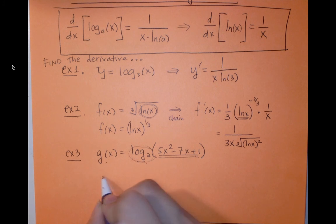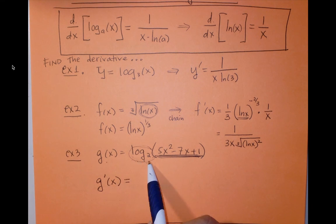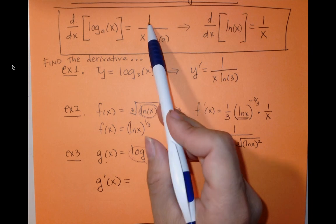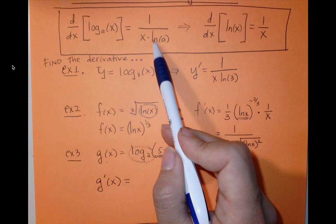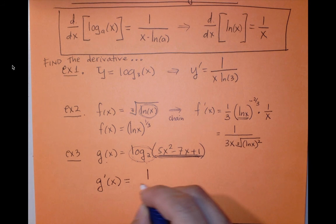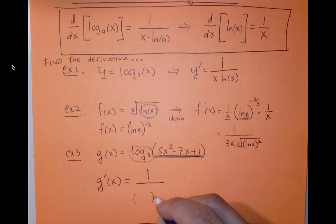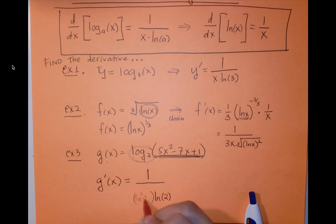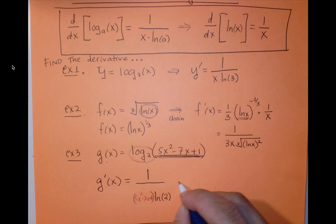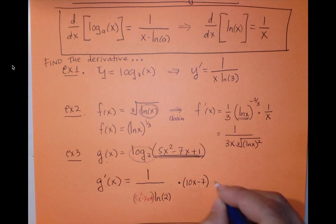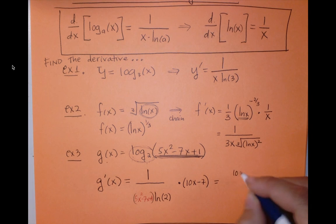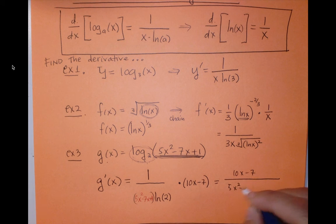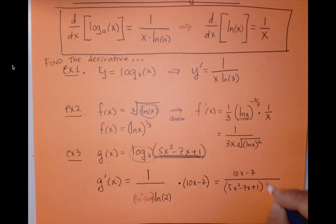In this case, my inside function, well, the derivative of log base 2 is going to be 1 over x log 2, natural log of 2. So you have 1 over my inside function times ln of 2. And I multiply this by the derivative of the inside function, which is 10x minus 7. And simplifying a little bit, we get 10x minus 7 over 5x squared minus 7x plus 1 times ln of 2.